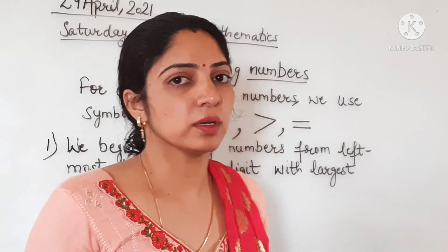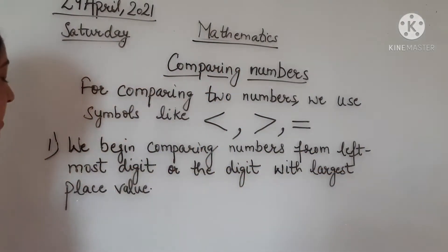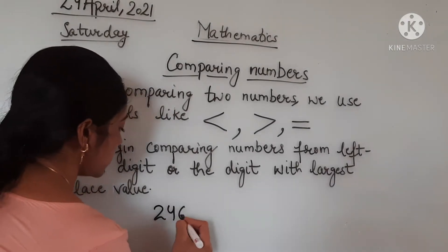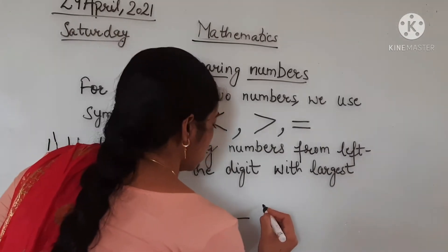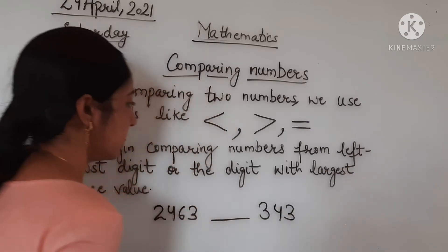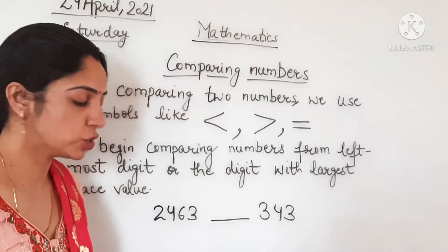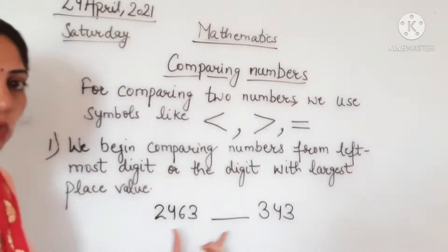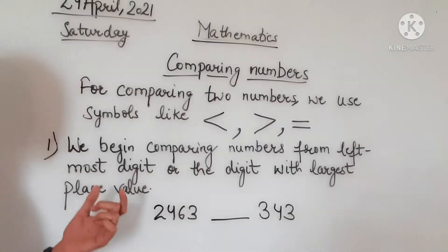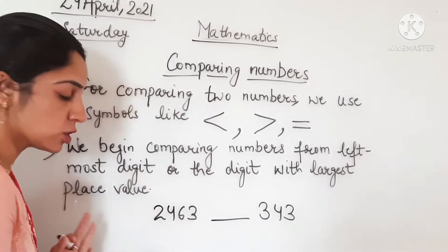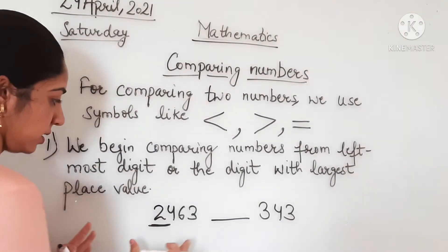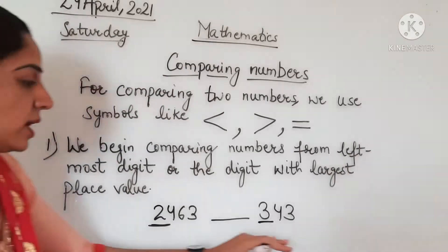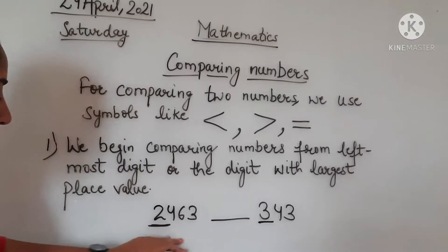When we begin comparing two numbers, we start from the leftmost digit. For example, if we have 2,463 and 3,463, we start from the left side. The left-side digit here is 2, and here it is 3.